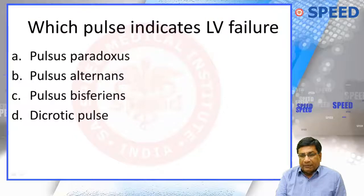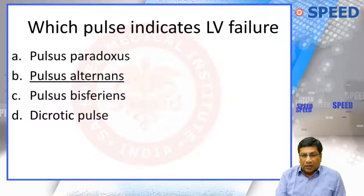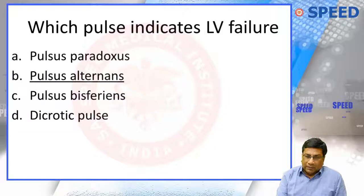Which pulse indicates LV failure? Pulsus alternans is a sign of left heart failure. Alternating strong and weak pulses — pulsus alternans — is a sign of left heart failure.